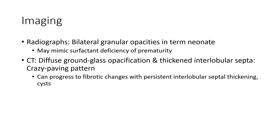In the imaging, large areas of bilateral ground glass opacity with interlobular septal thickening may mimic surfactant deficiency of prematurity. CT shows diffuse ground glass opacification and secondary interlobular septal thickening, which can progress to fibrotic change with persistent interlobular septal thickening.